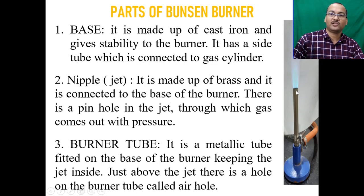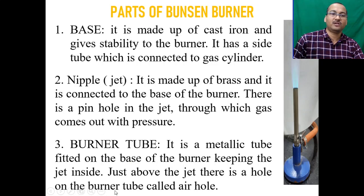The long tube is the burner tube — a metallic tube fitted on the base of the burner, keeping the jet inside. Just above the jet, there is a hole on the burner tube called the air hole.